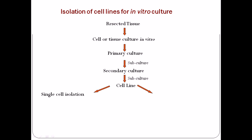From the cell line we can pursue several different paths: single cell isolation, successive subculture, or immortalization of that cell line. Once we get a cell line, we can go for single cell isolation to study and store it for future purposes. We can do successive subculture to continuously study that cell and its properties in different environmental conditions and experiments. Third is immortalization — once a cell is immortalized, no matter how many times we subculture it, it will not die and will not lose its viability or growth pattern.